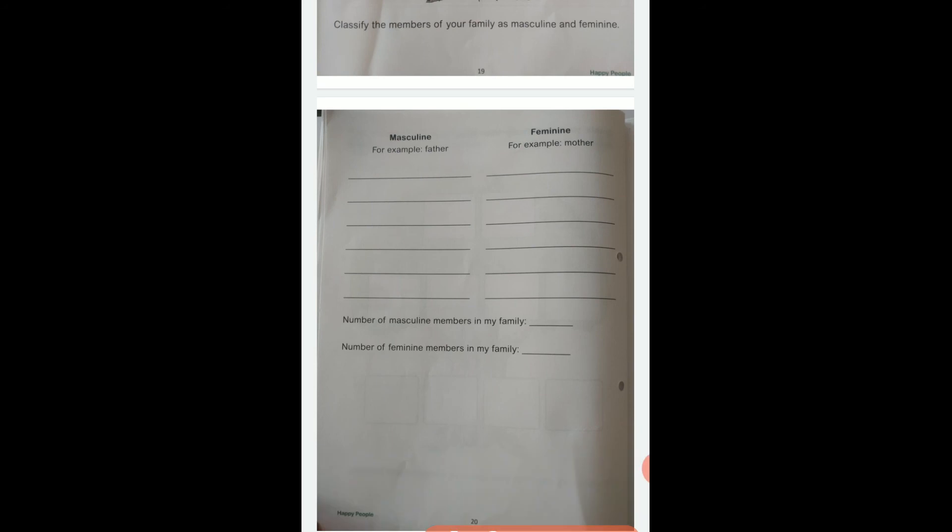Page number twenty is where you do this classification. For example, from the family tree you will have father, grandfather, uncle, brother in masculine, and sister, mother, grandmother, aunt in feminine. All of this you have to divide into masculine and feminine. In masculine you can write male members' names, and in feminine you write female members' names. Wherever in your family the members are, then you have to write the number of masculine members in my family and number of feminine members in my family.